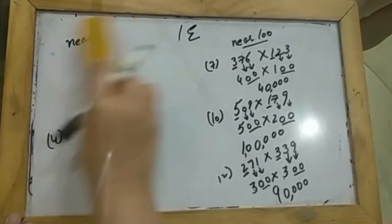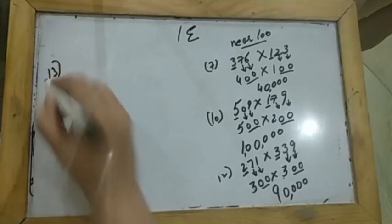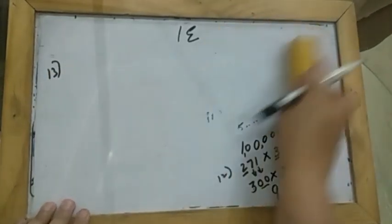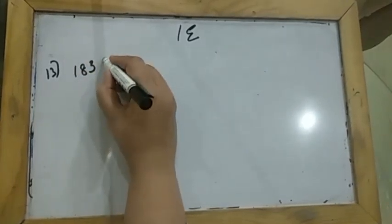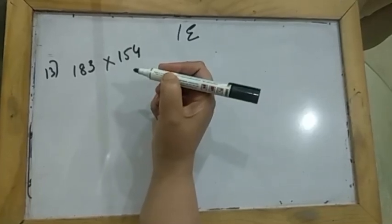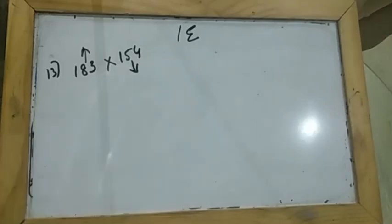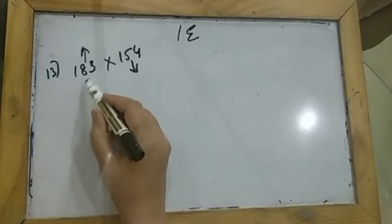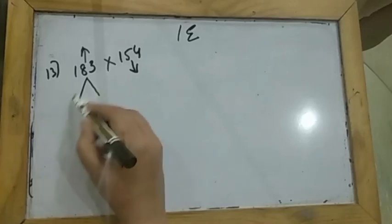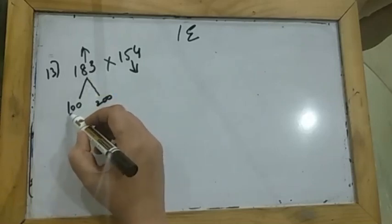Now I come to the next question, which says: estimate each of the following products by rounding the first number upward and the second number downward. In the 13th question they have given two numbers to multiply, asking you to round off the first number upwards and the second number downwards. Now I will see that 183 lies between 100 and 200.